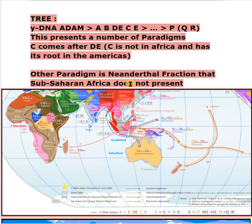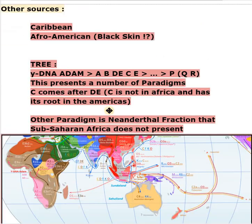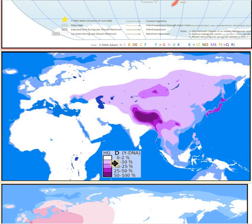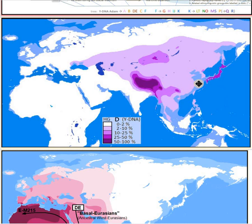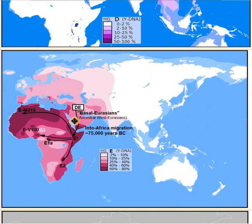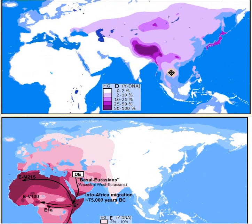Another paradigm is the Neanderthal fraction that Sub-Saharan Africa does not present. How does it get from A, B or D, E, C into the rest of the world? So looking at the map, D is supposedly connected with E. D is clearly absent in Africa — Africa is white on the map — while E is present in Africa and not where D is. D is mostly in Tibet, Japan, and Andaman Islands.